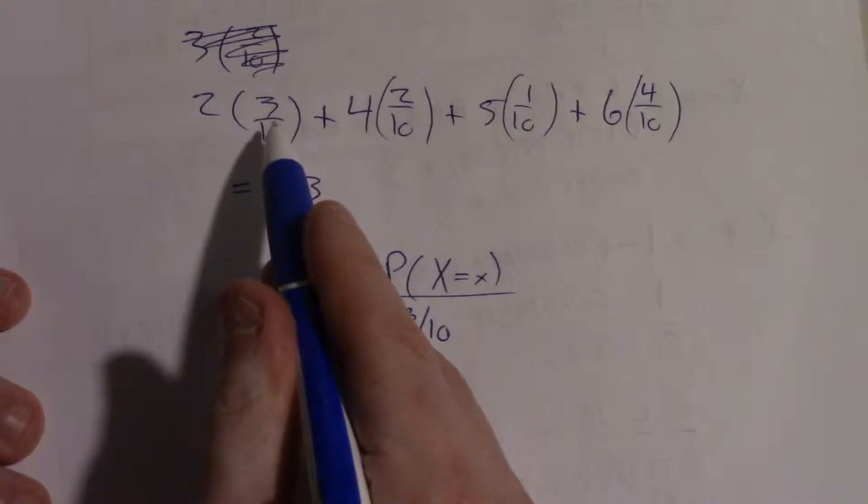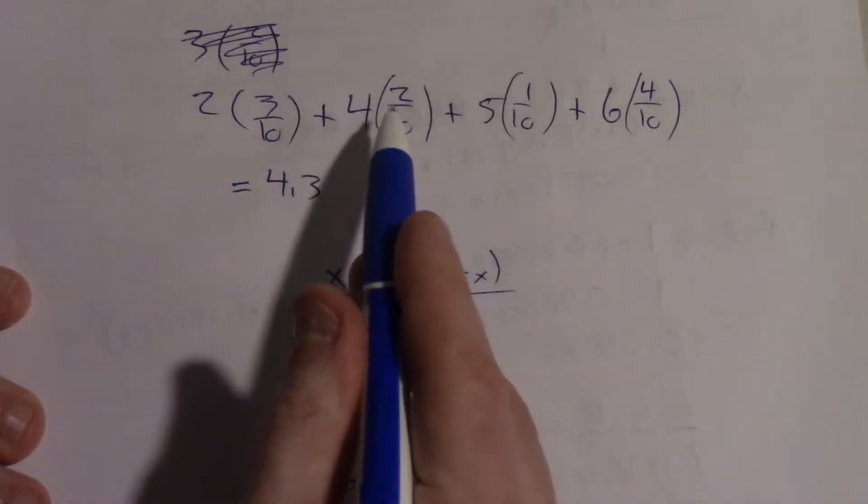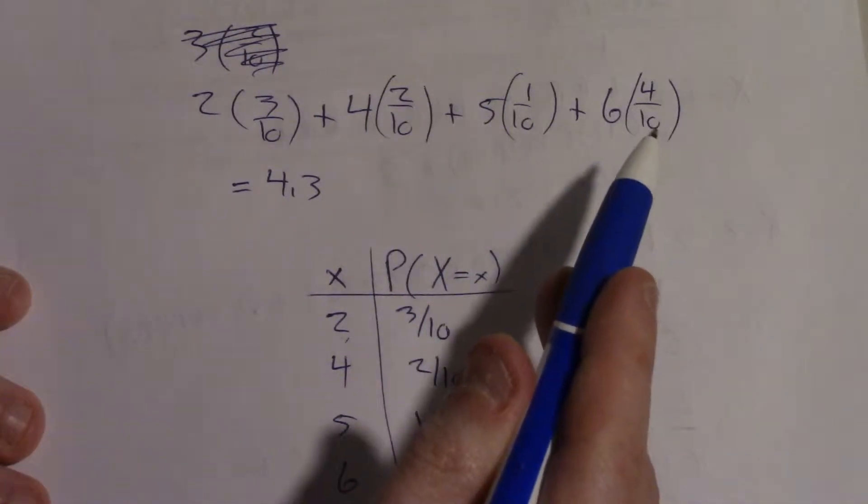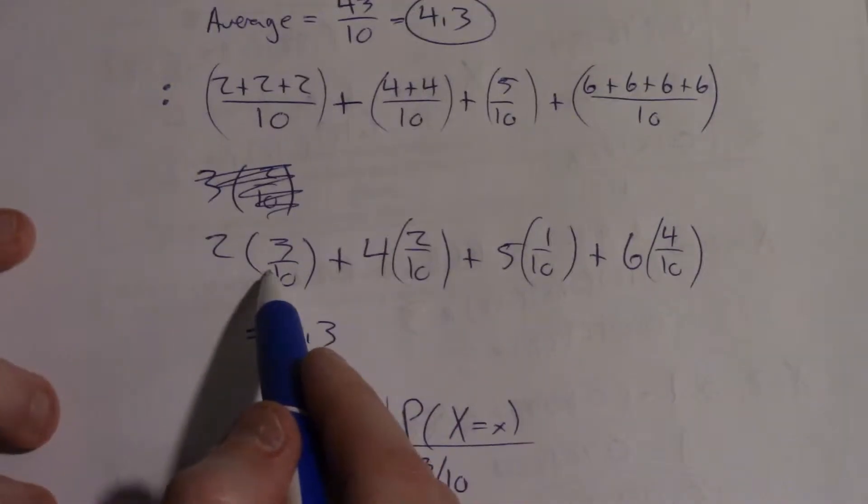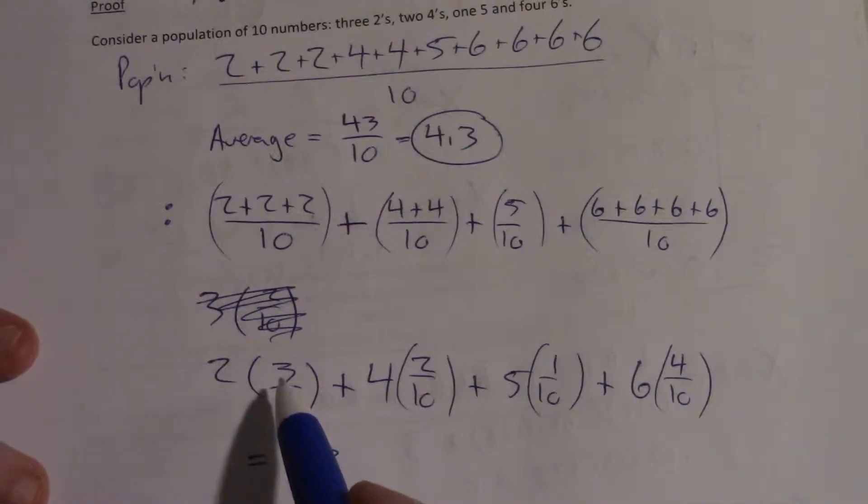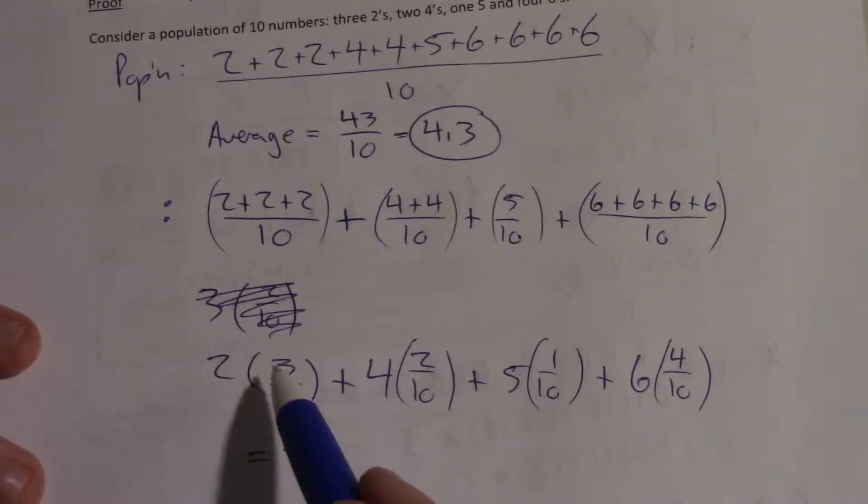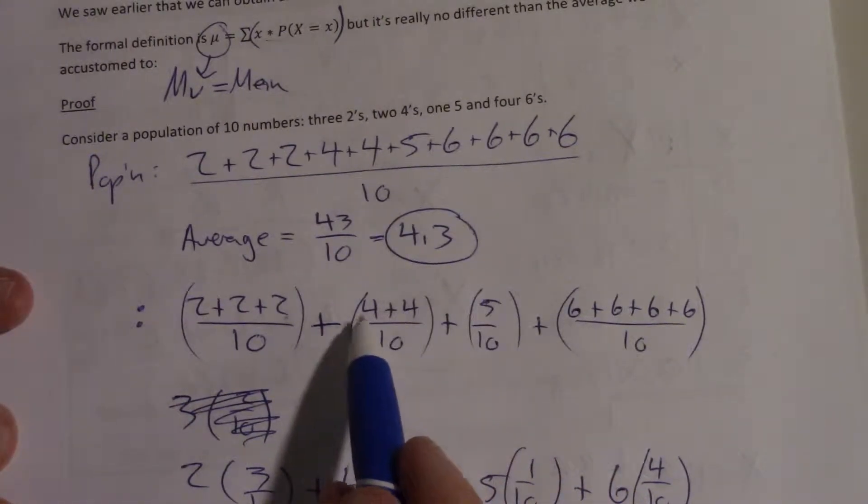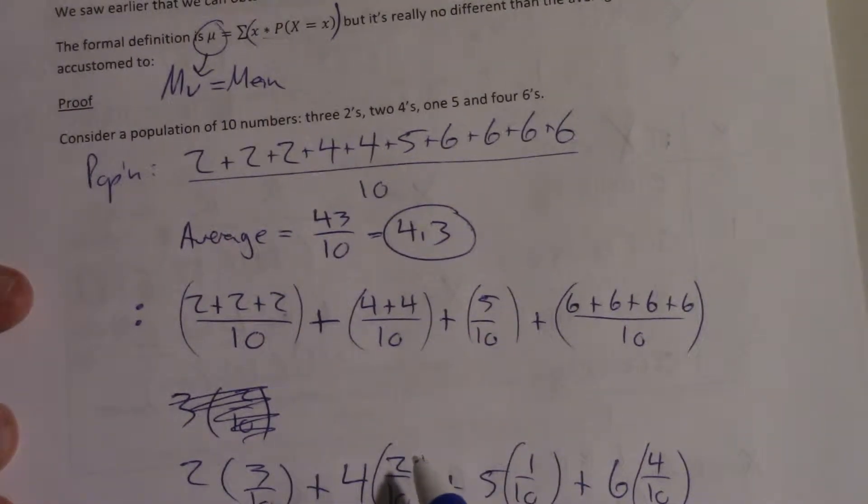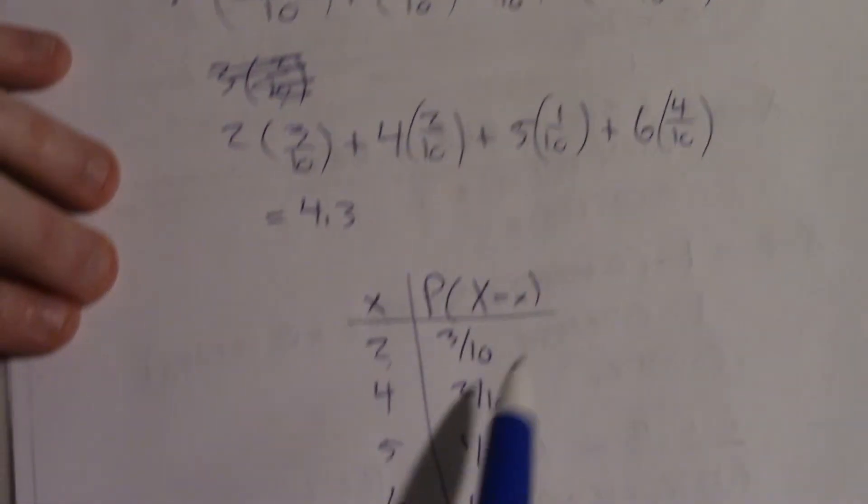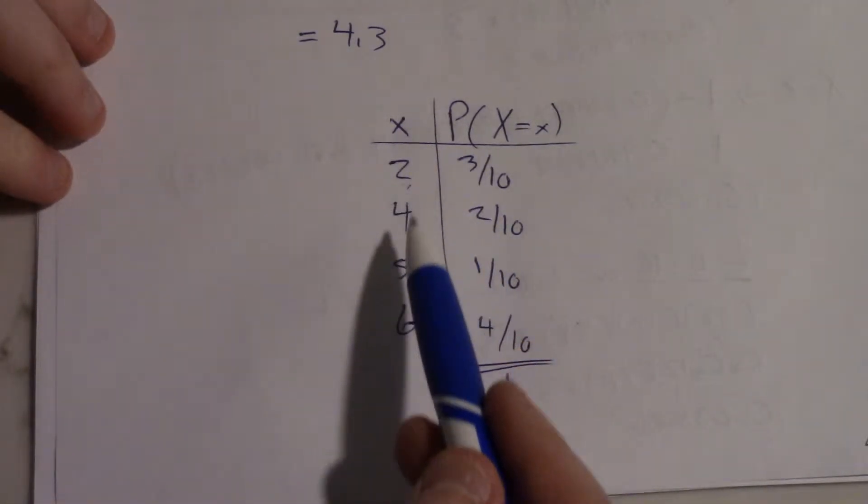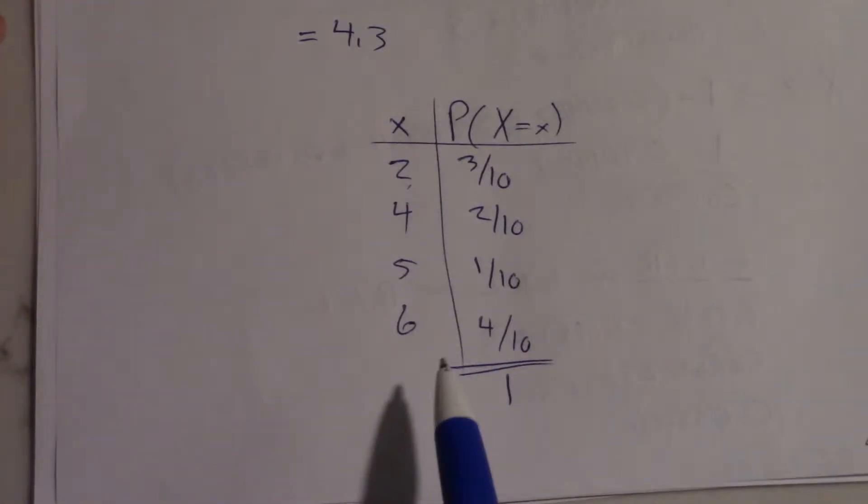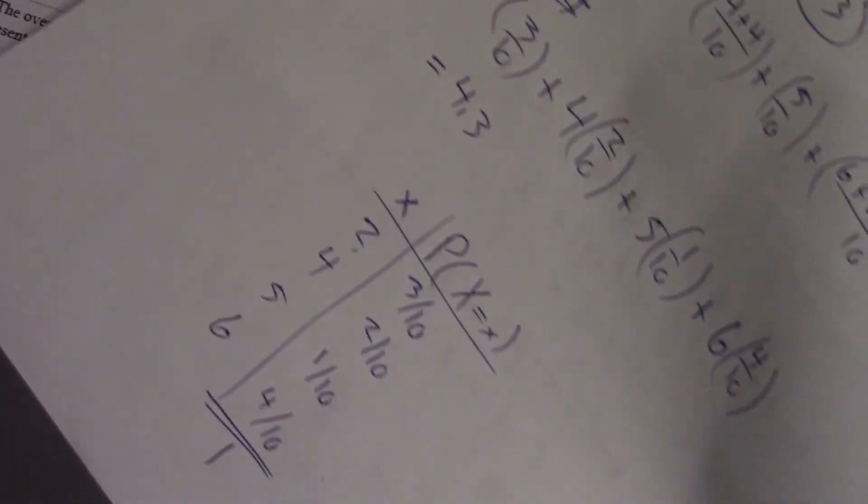So 2 times 3 tenths plus the next one. 4 times 2 tenths plus the next one. 5 times 1 tenth plus 6 times 4 tenths. That math gives you 4.3. And either way you read this, these steps, as you start expanding out what 2 times 3 over 10 is, that means that you have three 2's, two 4's, one 5, four 6's. They're all over the same denominator, so you can combine them all together, and then you're back to the old way of computing an average. So it's two different ways of getting to the same spot, but the new formula just takes advantage of the shape of the table. Take each x times its probability, add them all up, and that's the new way of finding an average.